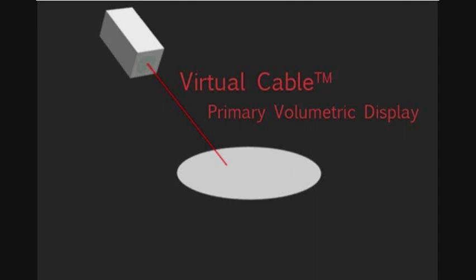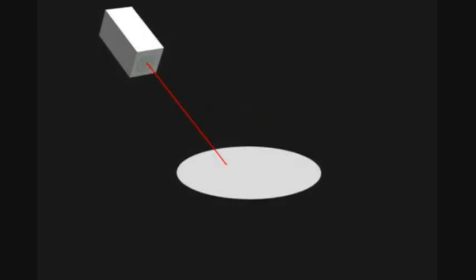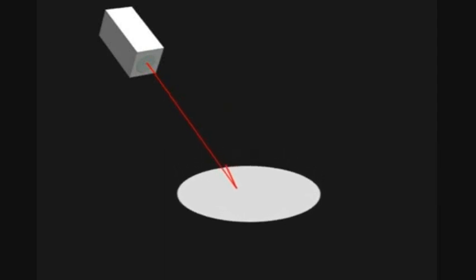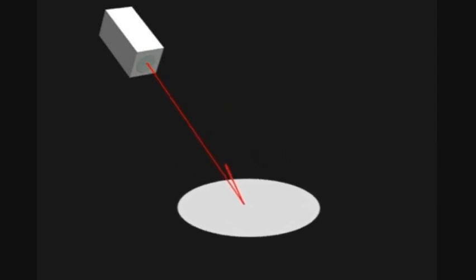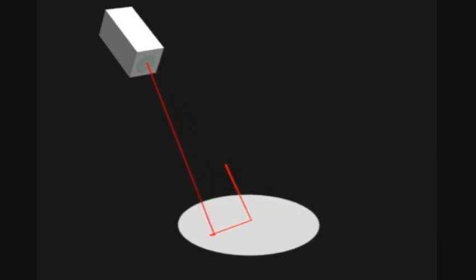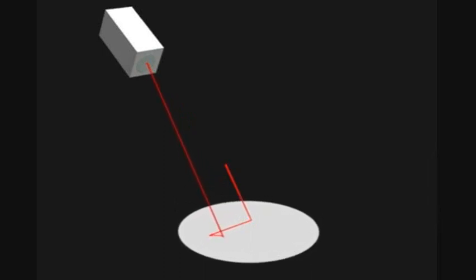Now we're going to focus on the primary volumetric display. The primary volumetric display consists of a laser projector and a movable screen. The laser projector draws the virtual cable on the screen as the screen moves up and down. The line is drawn 60 times per second.